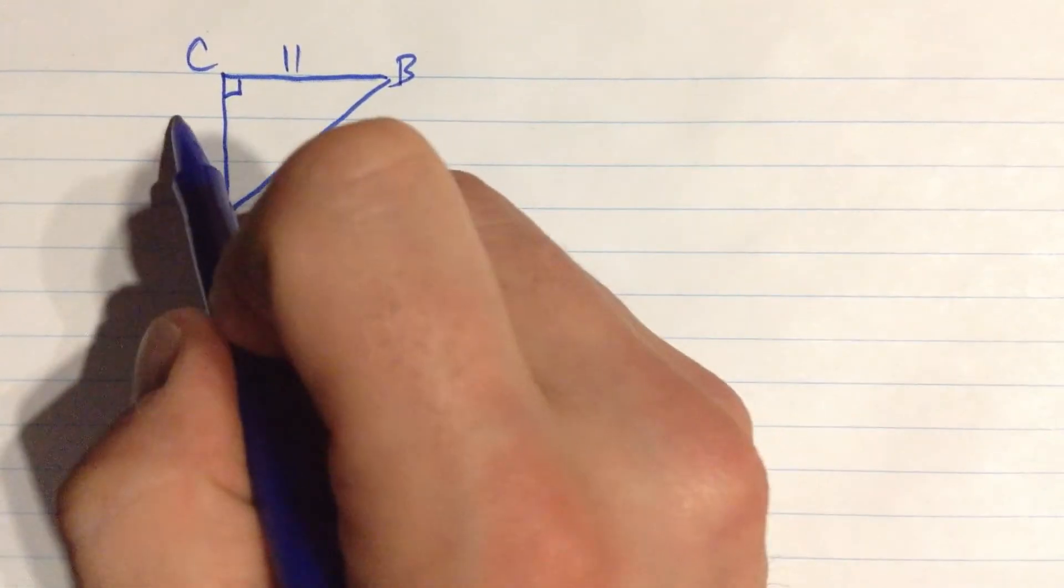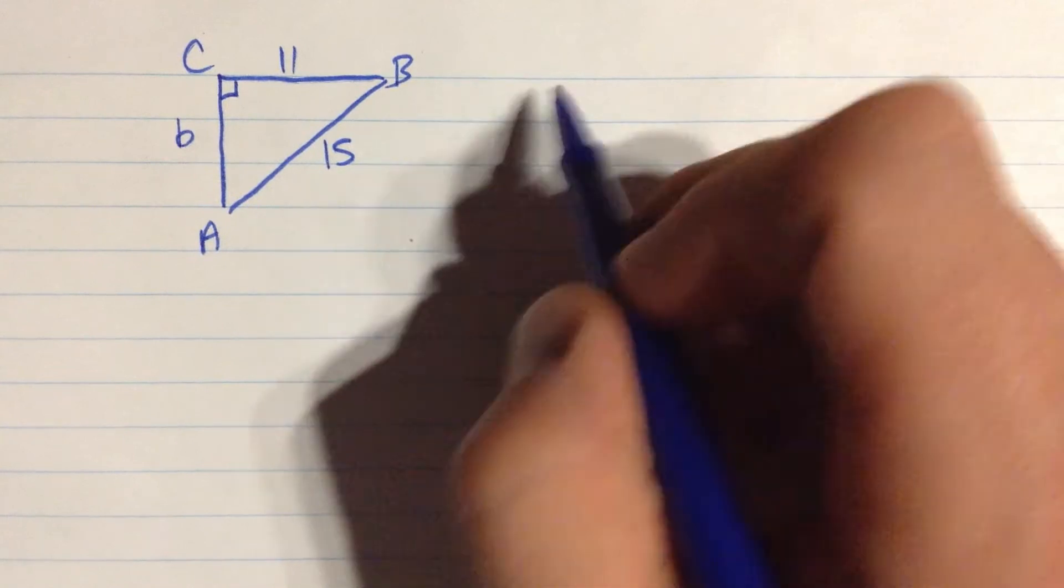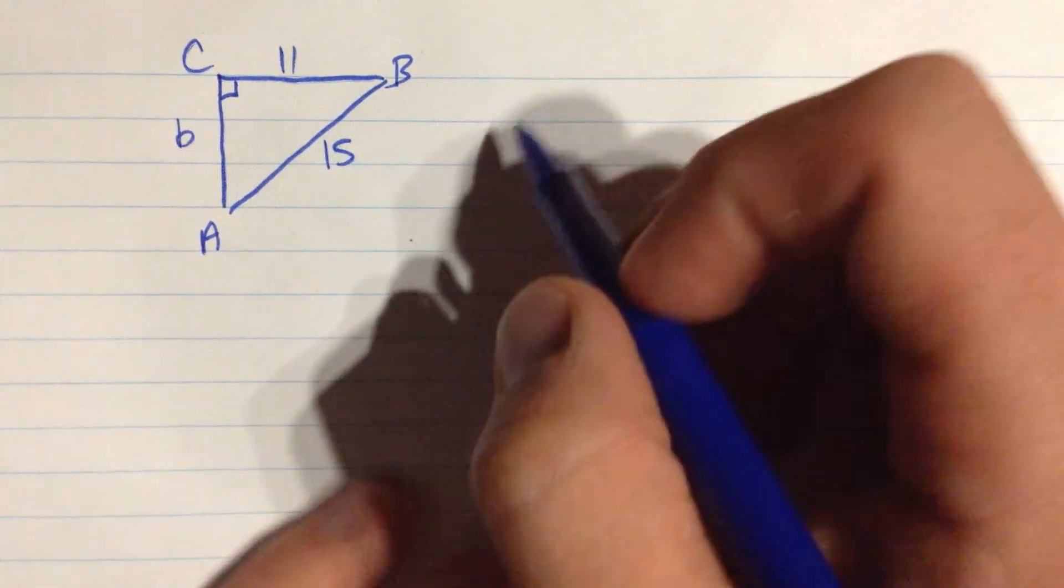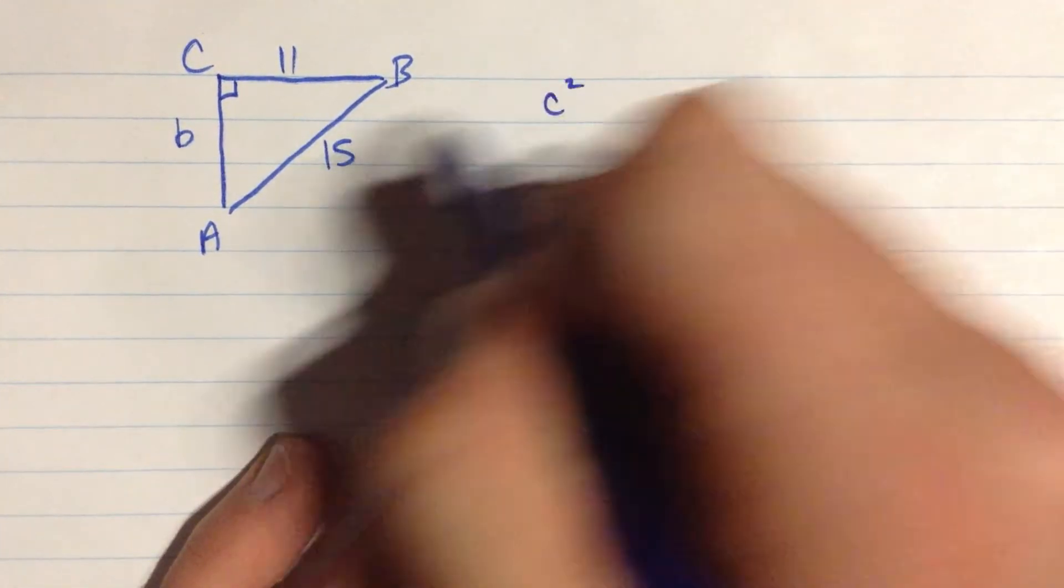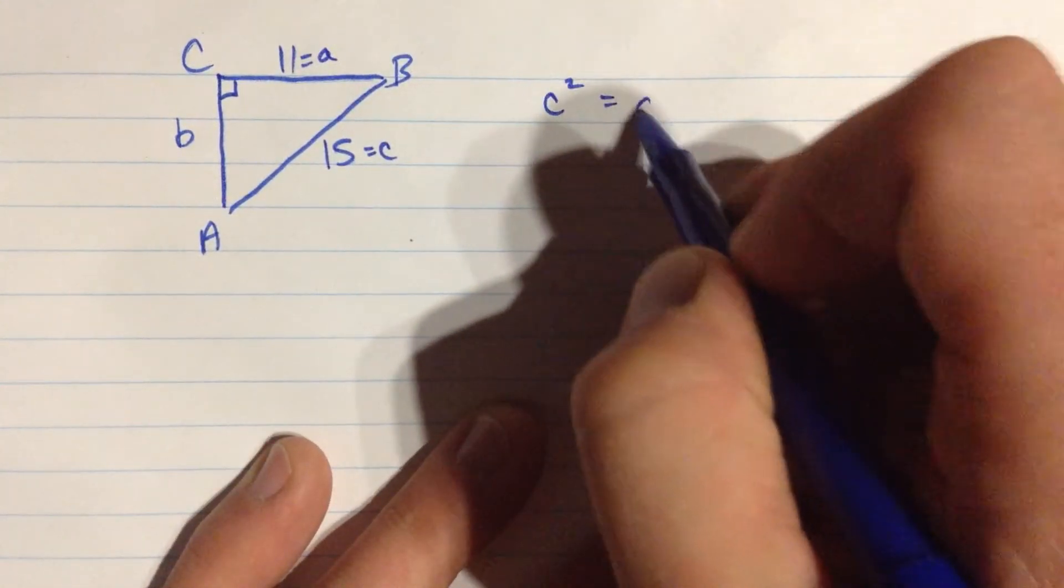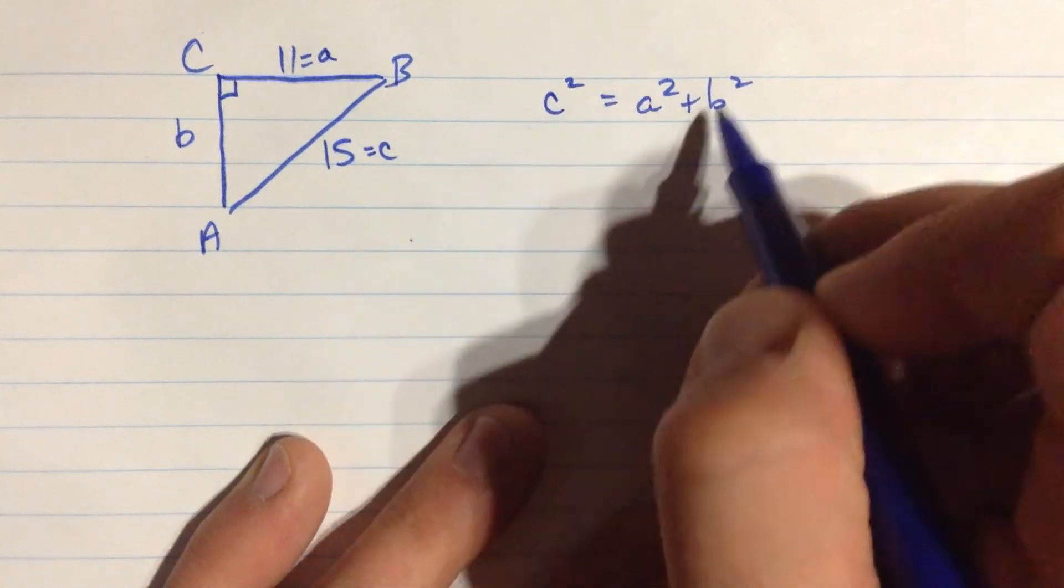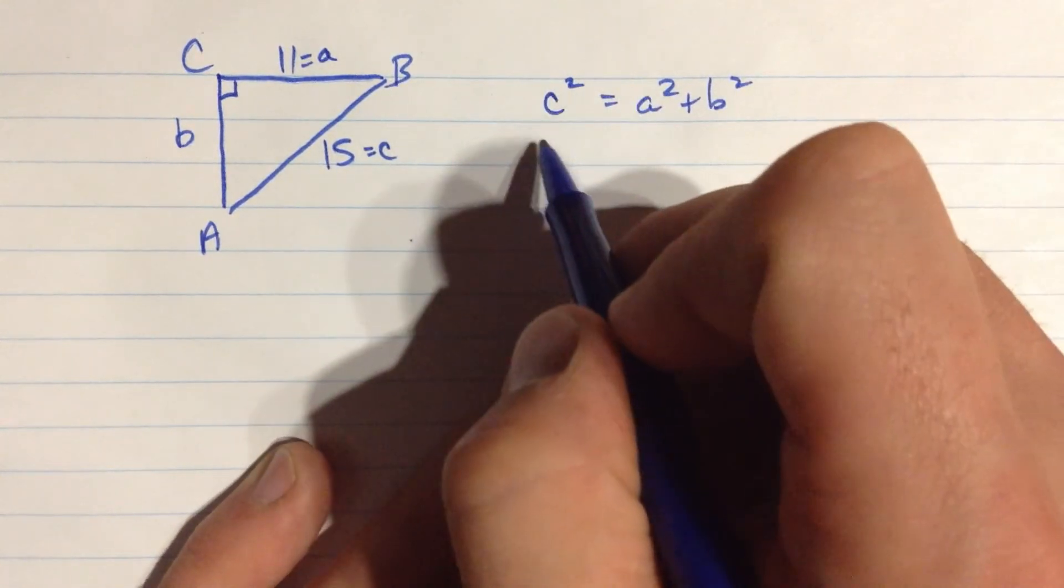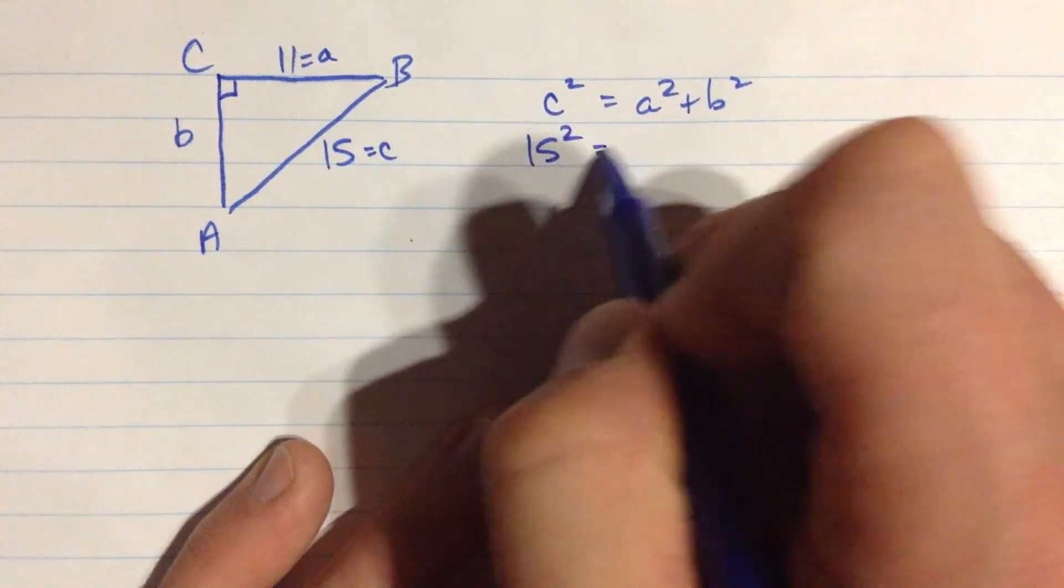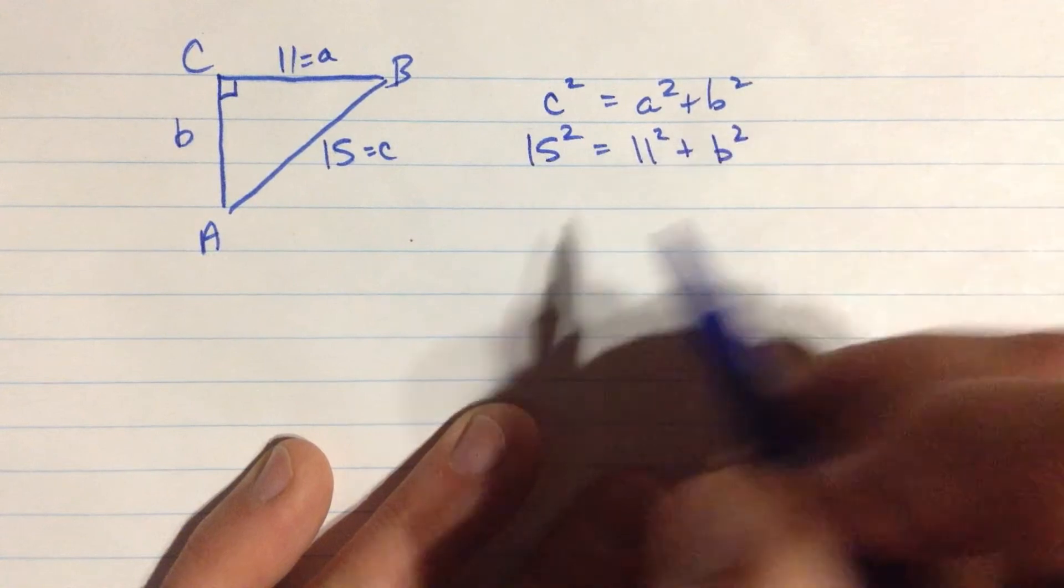So, let's call this a, b, and I'll use c again, and so this side is little b. What's my relationship going to be? Well, I'm going to write this in a couple of different ways. We know that c squared, which is this side, this side is a, c squared is a squared plus b squared. So, we can fill in all the values and solve this right here. So, 15 squared is 11 squared plus b squared.